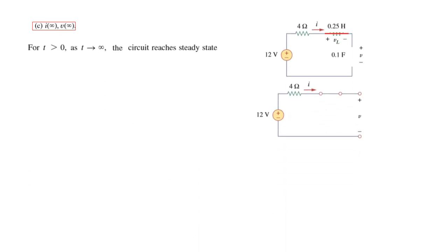For the third part, i(∞) and v(∞): at t infinity the inductor is a short circuit and the capacitor is open circuit. No current flows because of the open circuit, so i(∞) = 0 amperes. The voltage v(∞) equals the source voltage with no drop across the short-circuit inductor, so v(∞) = 12 volts.